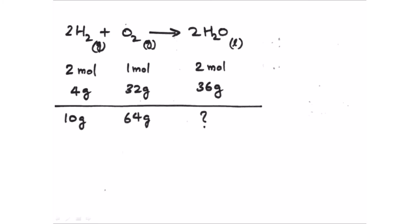We have 10 grams of hydrogen and 64 grams of oxygen reacting. From the balanced equation, 4 grams of hydrogen reacts with 32 grams of oxygen to give 36 grams of water. We can see that 10 grams and 64 grams are multiples — 64 is the second multiple of 32.